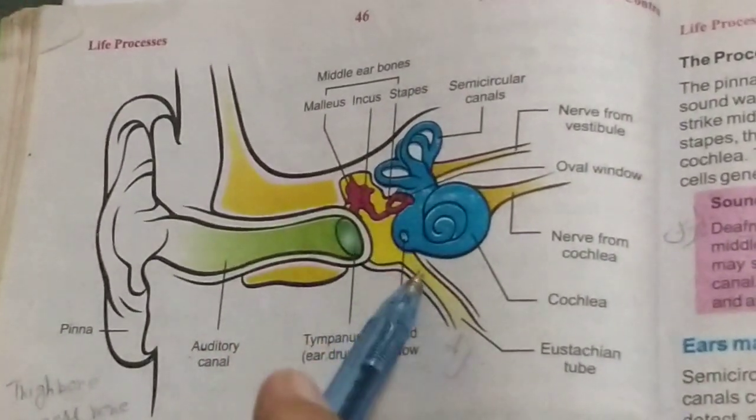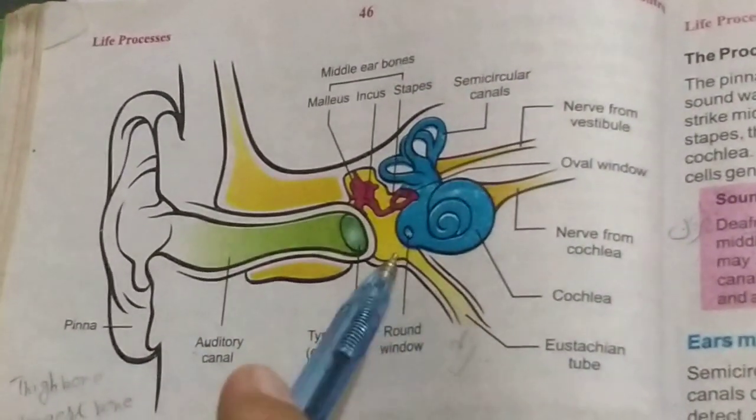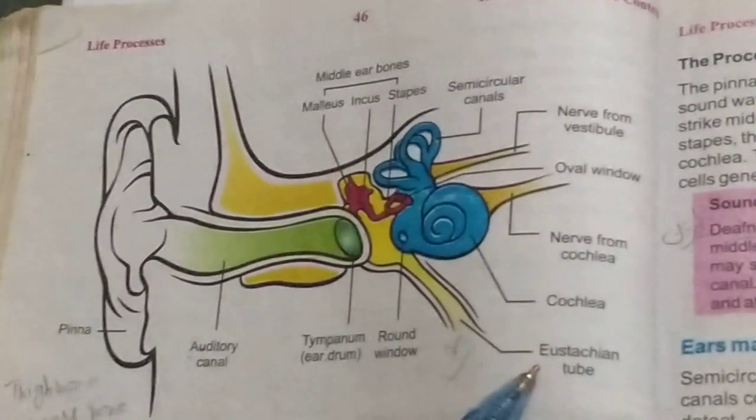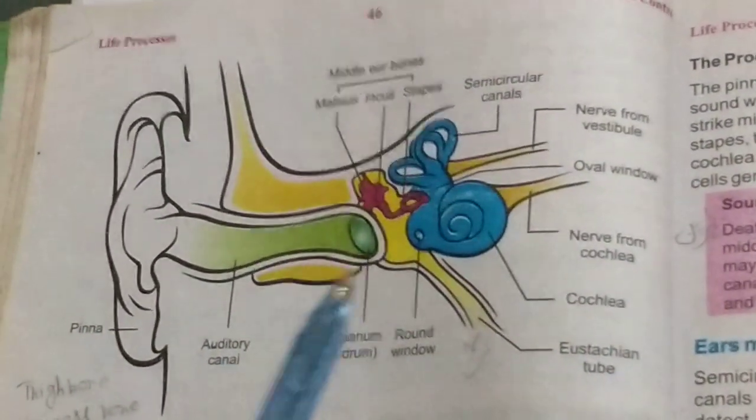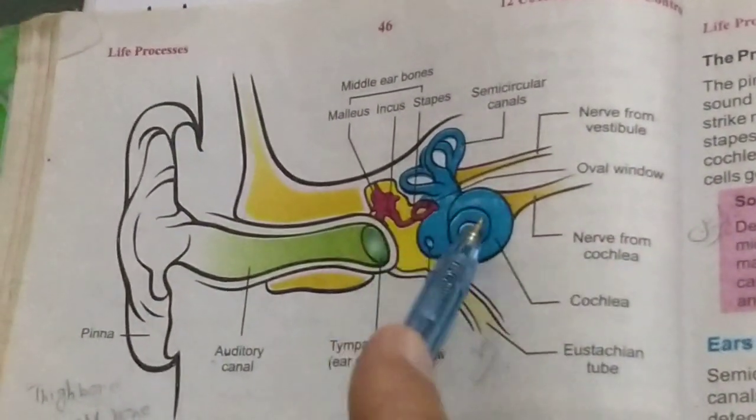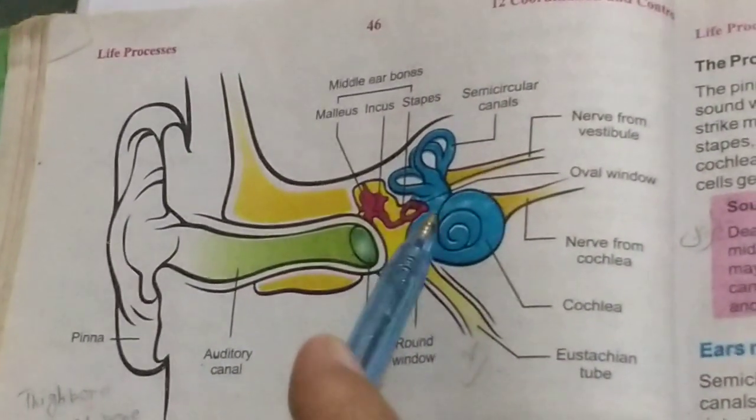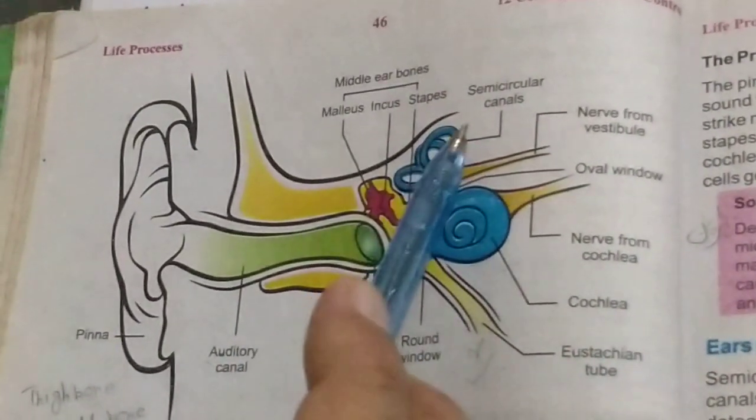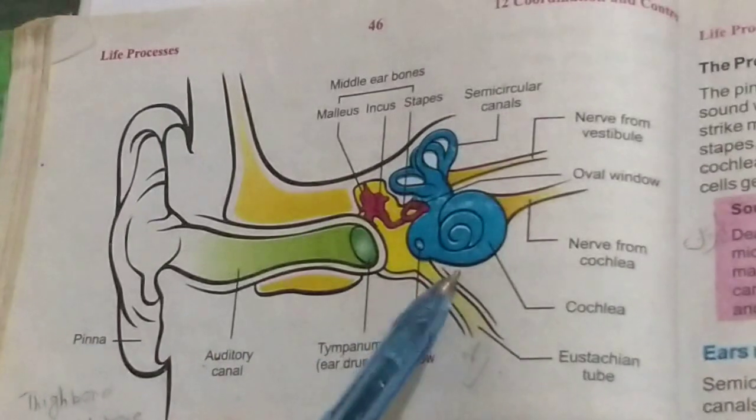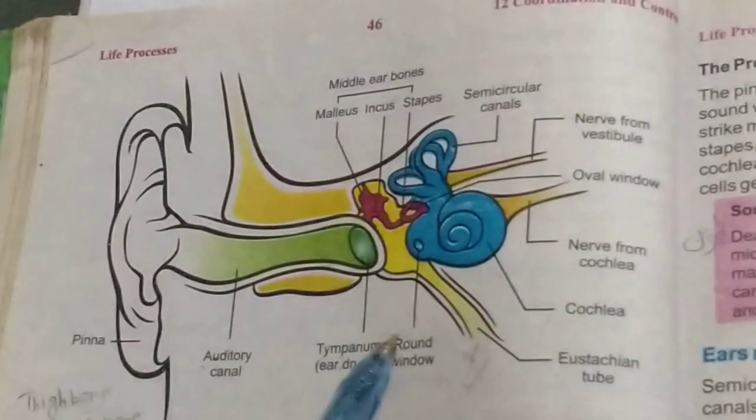In middle ear, there is the eustachian tube, which connects to the throat.